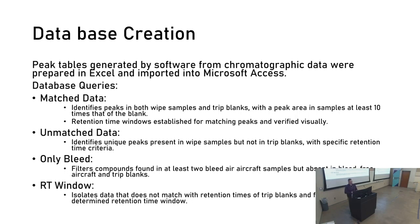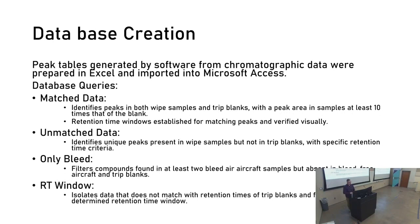We did some peak-matching work where you set peak-specific retention time windows and then add as many other criteria as needed — base peak, qualifying ions — and check that those things match up between samples. You can set ranges of error and basically customize however you want. We looked at things that had 10 times the peak area in our samples compared to our trip blanks, things unique to samples versus trip blanks, and things present only in bleed-air aircraft.